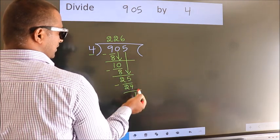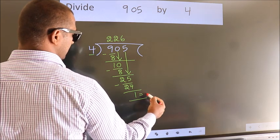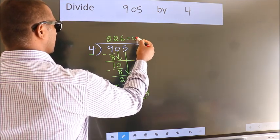No more numbers to bring it down. So, we stop here. This is our remainder. This is our quotient.